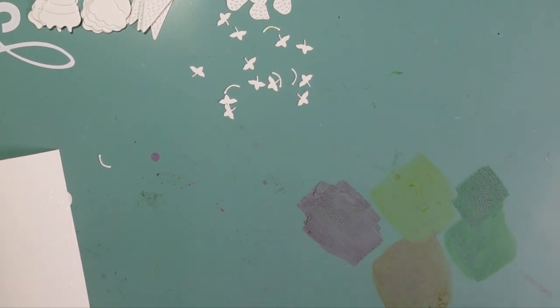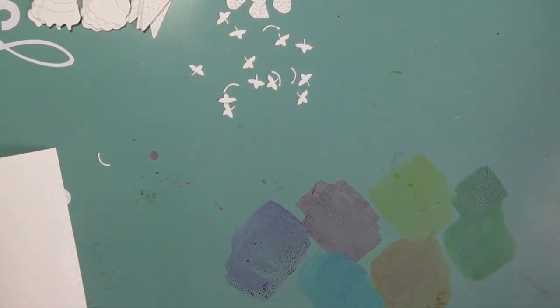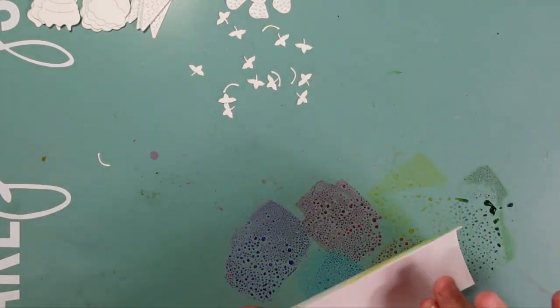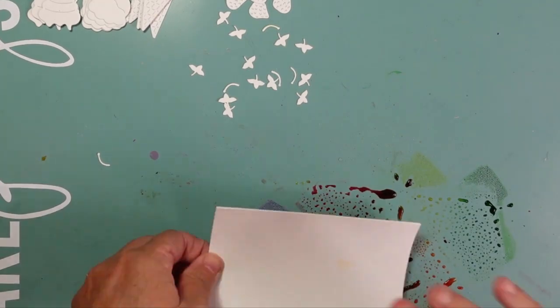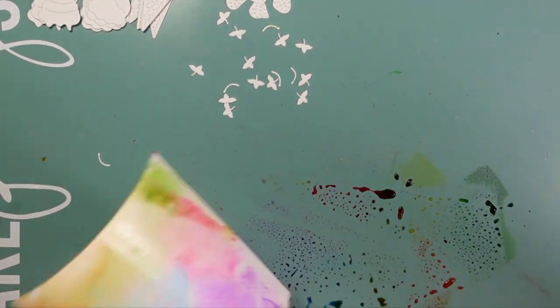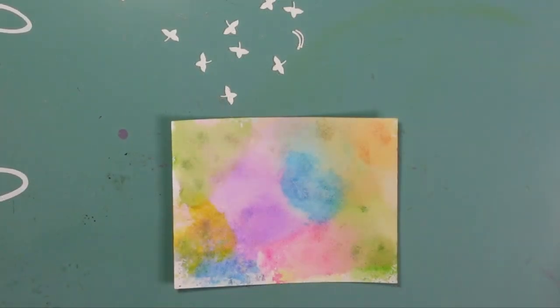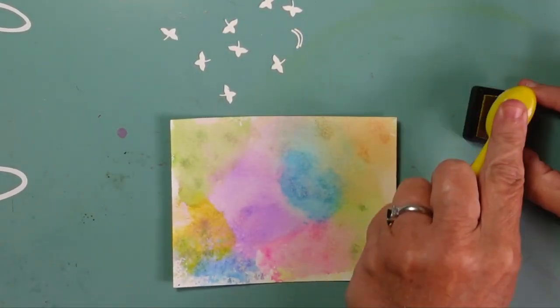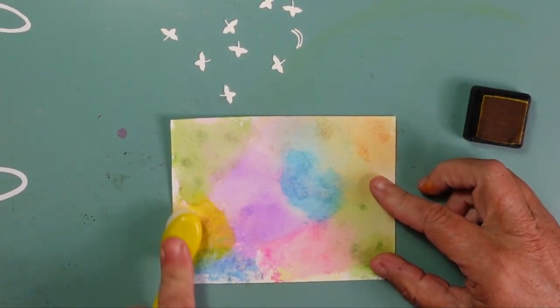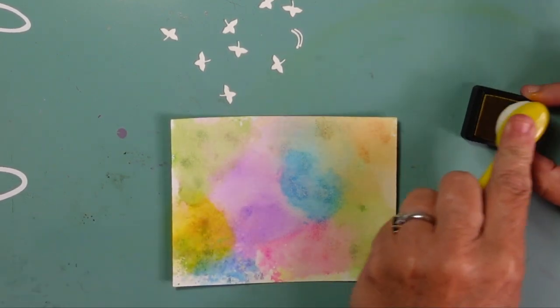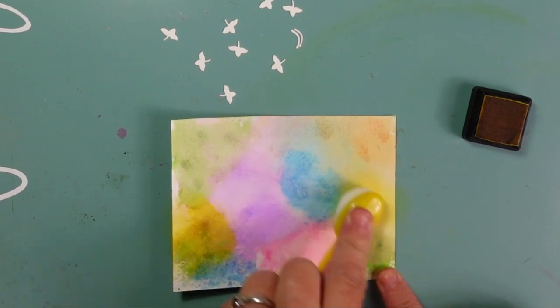I'm using my Distress inks and I'm going to apologize because I'll be a little bit off camera here. I started with Picked Raspberry, I added Mustard Seed, Wilted Violet, Mowed Lawn, Carved Pumpkin, and then Salty Ocean. I spritzed my watercolor panel—this is Canson watercolor paper—with water, and then I spritzed my inks and I dipped my watercolor paper into those wet inks.